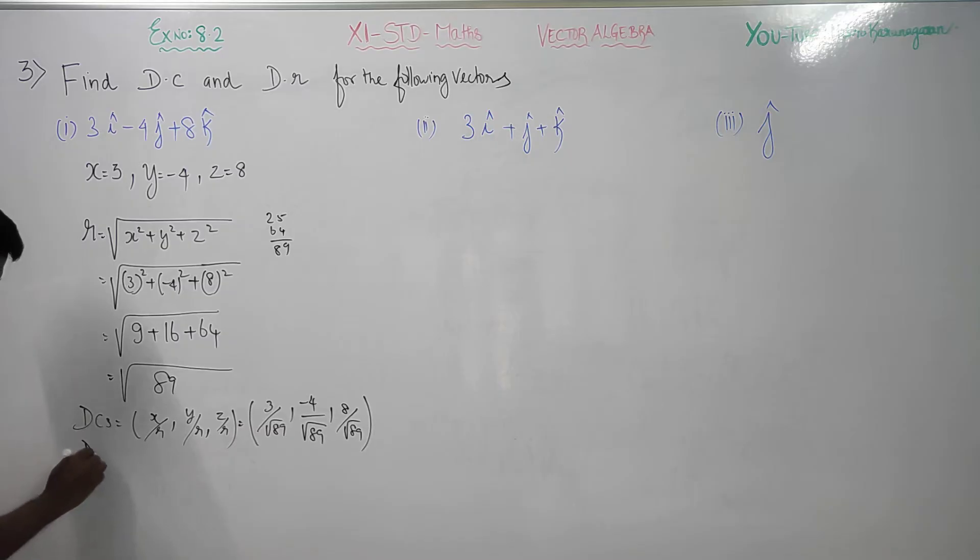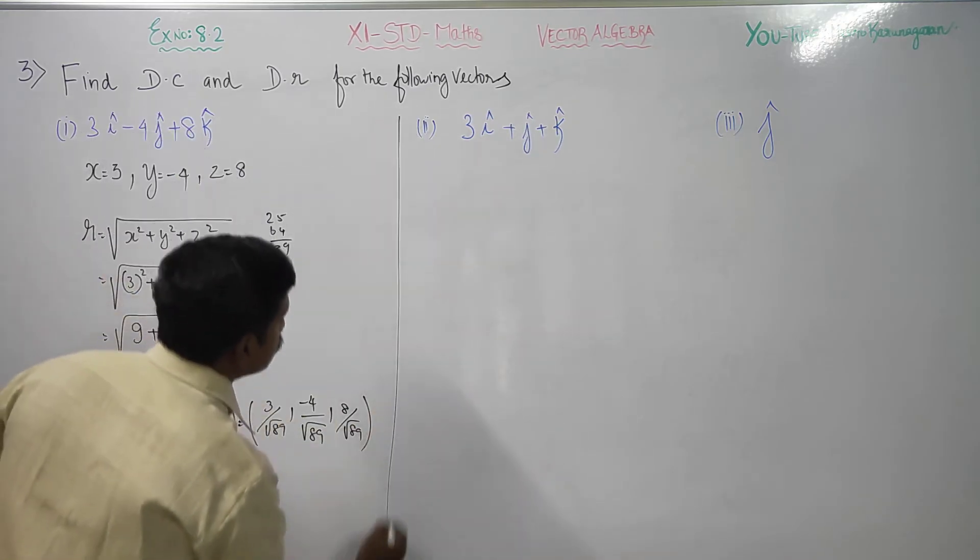Then my direction ratios, direction ratios are x, y, z. 3, comma, minus 4, comma, 8. My x, y, z's are called direction ratios. Coming to the second sum,